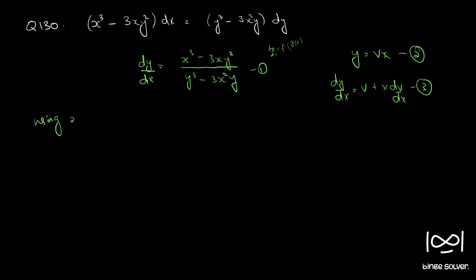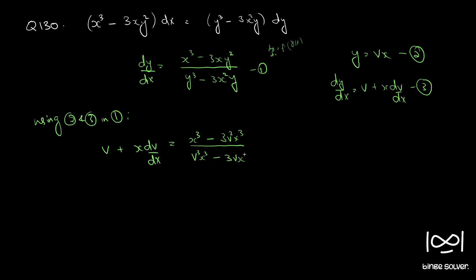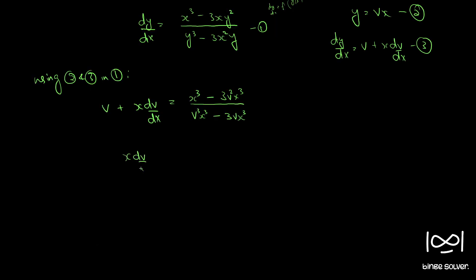Now using equations 2 and 3 in equation 1, we get v plus x dv/dx equal to x³ minus 3v²x³ by v³x³ minus 3vx³. Cancelling x³ from both numerator and denominator and bringing v across, we get x dv/dx equal to 1 minus 3v² by v³ minus 3v, minus v. This simplifies to 1 minus 3v² minus v⁴ plus 3v² by v³ minus 3v.